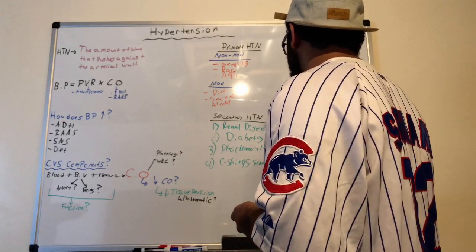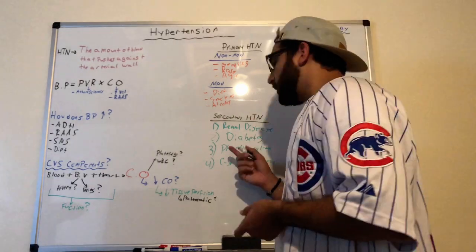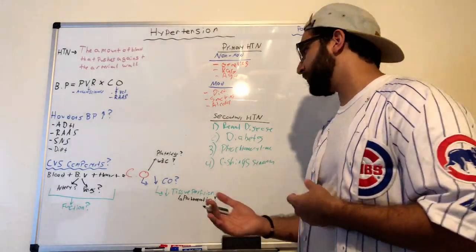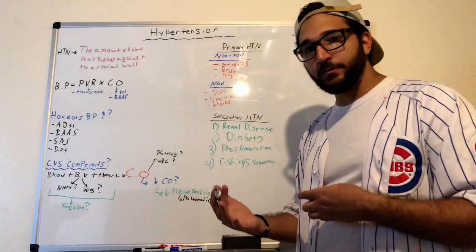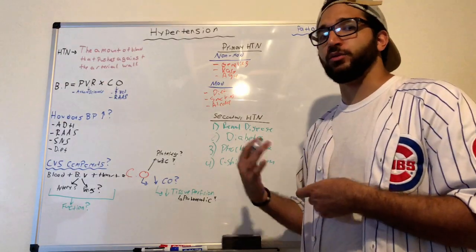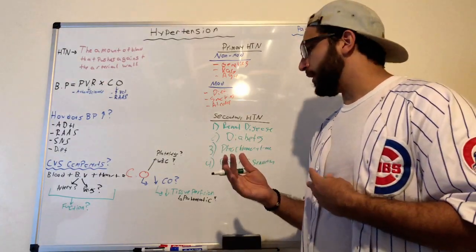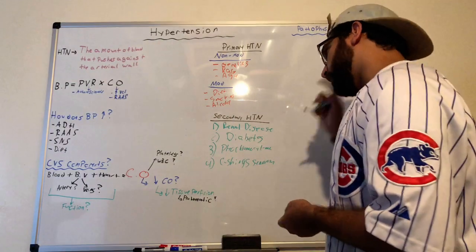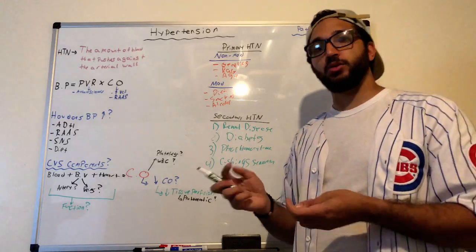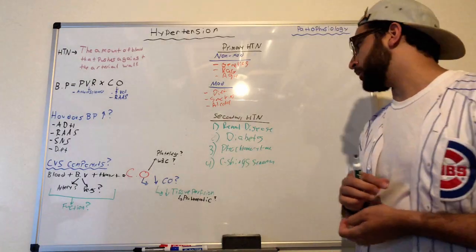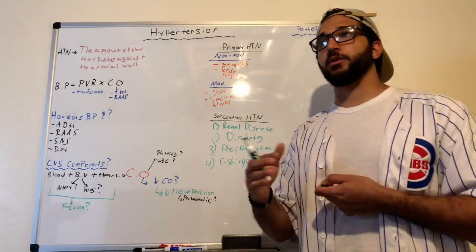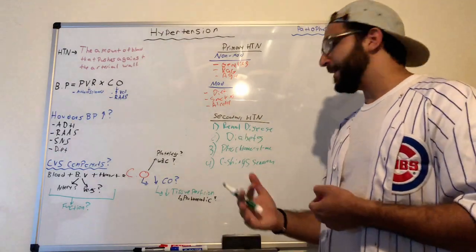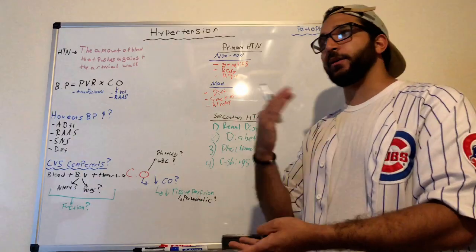Diabetes, if unregulated over time, increases blood sugar levels and disrupts blood pressure control. Pheochromocytoma is a tumor on the adrenal medulla that continuously releases epinephrine and norepinephrine, increasing heart rate and blood pressure — something we definitely don't want.